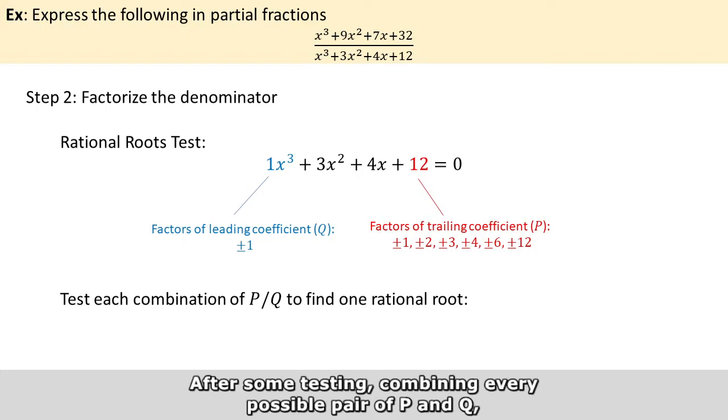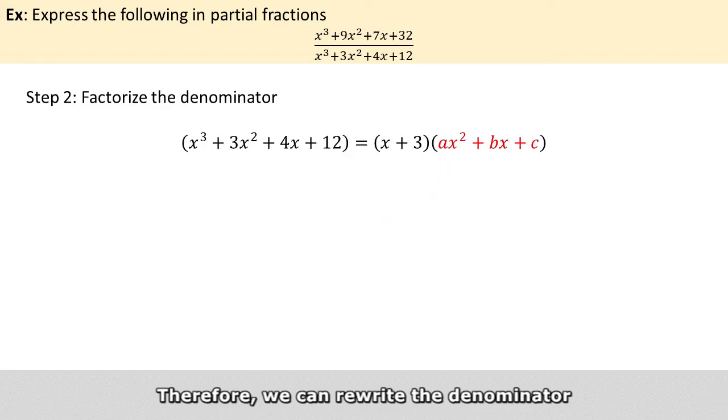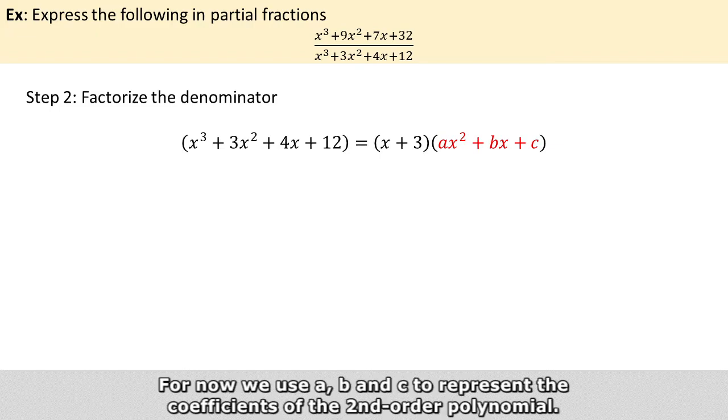So after some testing, combining every possible pair of p and q, you would discover that x equals minus 3. Therefore we can rewrite the denominator as the product of x + 3 and some second order polynomial. For now we use a, b, and c to represent the coefficients of the second order polynomial.